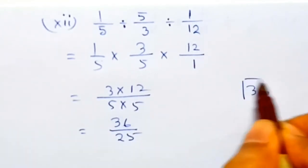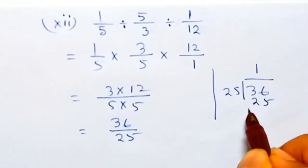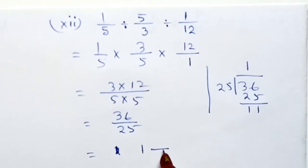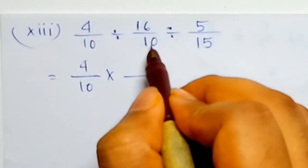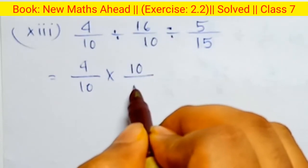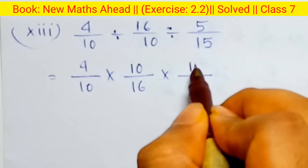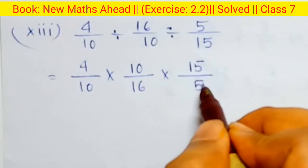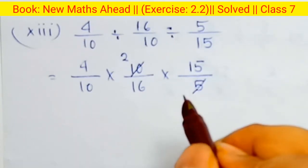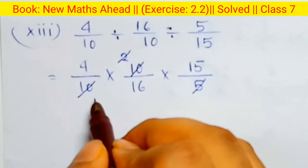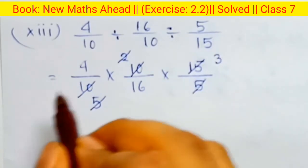Denominator: 5 into 5. Numerator: 3 into 12 — three into twelve is 36. Five into five multiplied is 25. So 36 over 25 — divide: 25 into 36, one time, remainder eleven. So answer is 1 whole 11 by 25. Next, 4 by 10 — divide becomes multiplication — 16 by 10, reciprocal is 10 by 16. Cancellation: 5 and 10 cancel — two times.